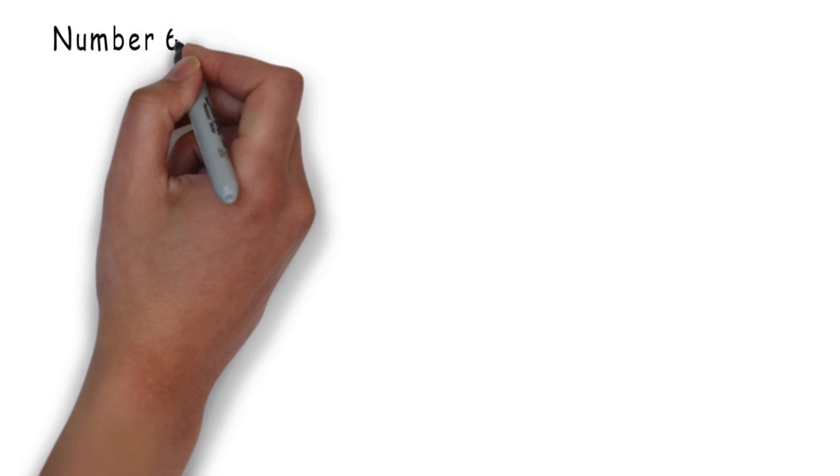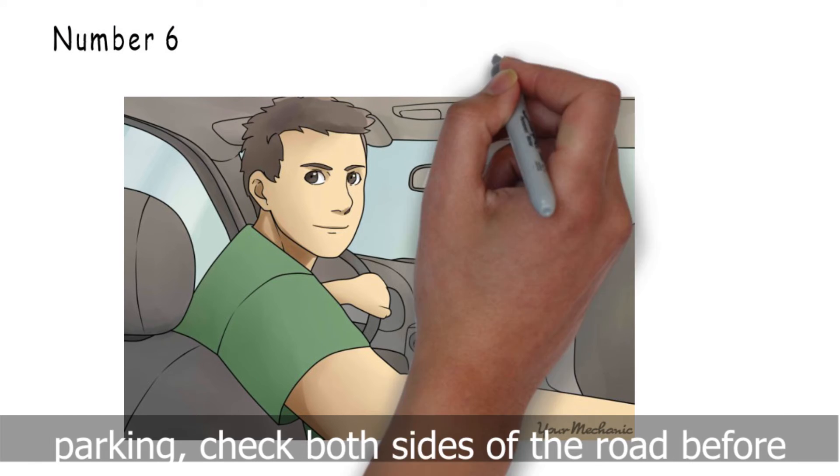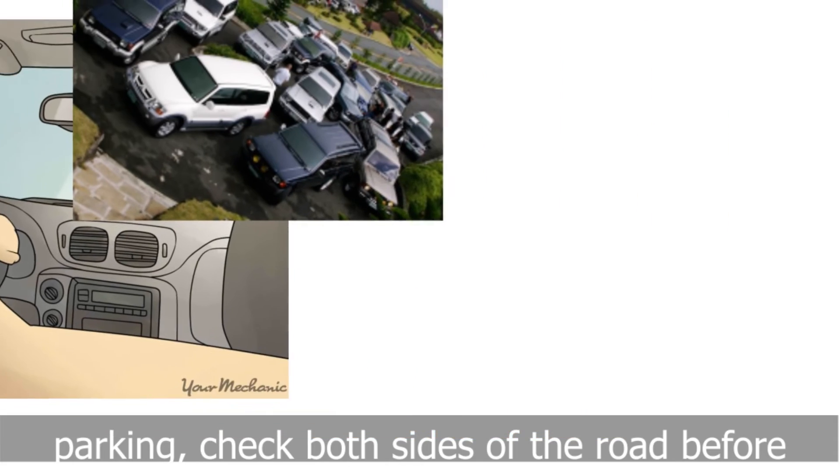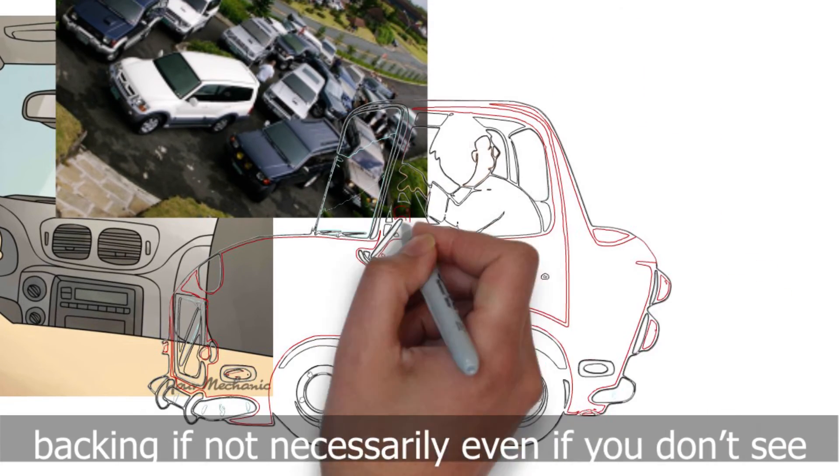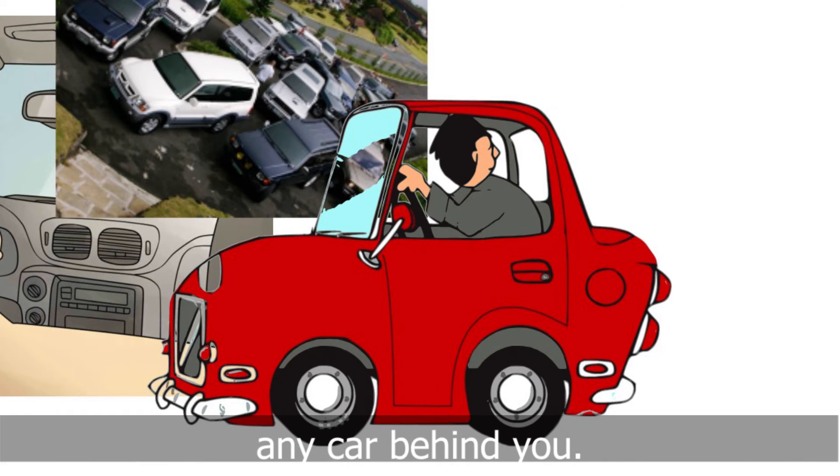Number 6. During the exam while driving out from a parking, check both sides of the road before going out and don't accelerate your car while backing if not necessary, even if you don't see any car behind you.